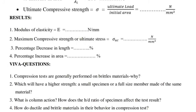Results: 1. Modulus of elasticity E = ___ N/mm². 2. Maximum compressive strength or ultimate stress σ_uc = ___ N/mm². 3. Percentage decrease in length = ___. 4. Percentage increase in area = ___.